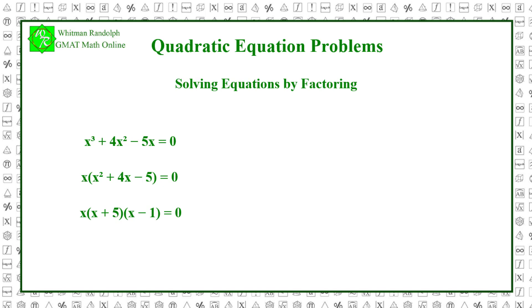Now, we set all three factors equal to 0 to determine the three roots of the original equation. x equals 0. x plus 5 equals 0, so x equals minus 5. And x minus 1 equals 0, so x equals 1.